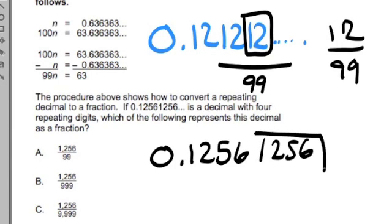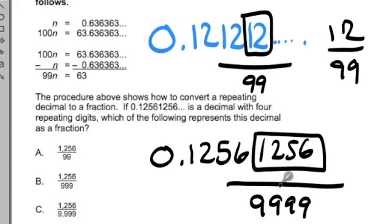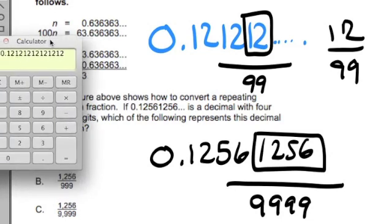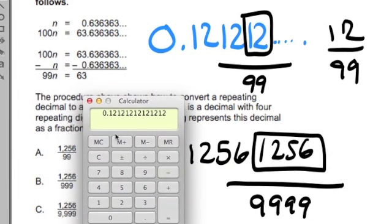First step, identify the portion that's repeating and put it in a box. Second step, count the digits in the box. In this case, there are four digits: the 1, 2, 5, 6, which means I use four nines. Now, is 1,256 divided by 9,999 our fraction? Let's test it. If I type in 1,256 and I divide it by four nines, 9,999, does that get me this repeating decimal? And guess what? It does.